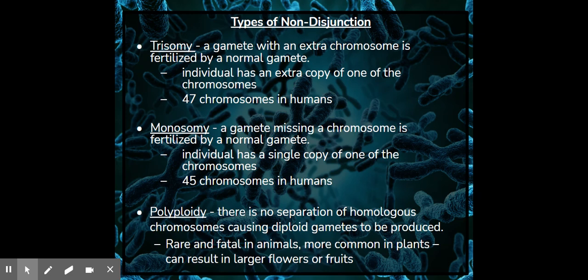In trisomy, a gamete with an extra chromosome is fertilized by a normal gamete. The individual has an extra copy of one of the chromosomes, so they have 47 chromosomes. In monosomy, the gamete is missing a chromosome and is fertilized by a normal gamete. This individual will have 45 chromosomes.